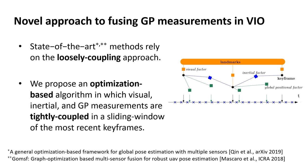State-of-the-art methods rely on the loosely coupled approach. This means that the VIO algorithm estimates the relative pose updates independently of the global positional information. In this way, the correlations among all the measurements are automatically discarded, resulting in suboptimal results.